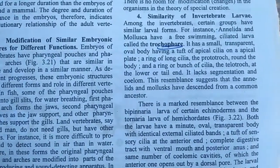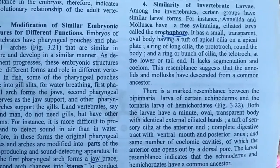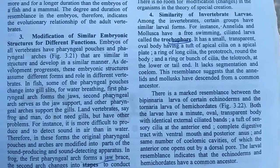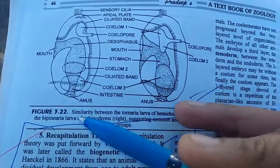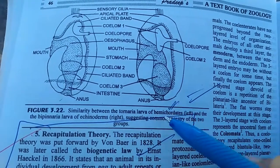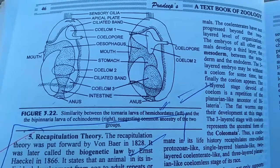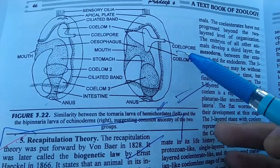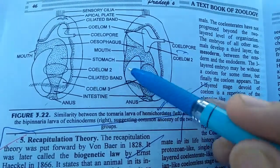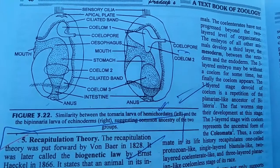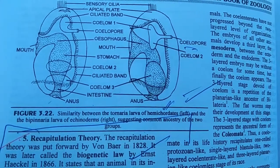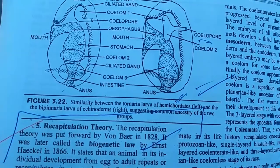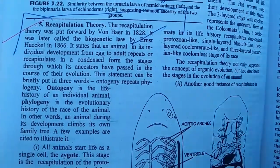Next is the similarity among the invertebrate larvae. If I discuss about the trochophore larvae of mollusca and annelida, and the tornaria larvae of hemichordata, it shows very useful features. The tornaria larvae of hemichordata and bipinnaria larvae of echinodermata are also similar. The trochophore larvae of annelida and mollusca are also similar. They have sensory cilia, they have the blastopore, they have the esophagus, mouth, and stomach. So they have similar structural features. This also shows that annelida and mollusca, and hemichordata, may have had a common ancestor sometime in their evolutionary history.